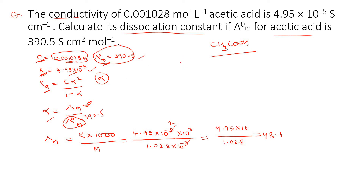Now we calculate alpha. Alpha = lambda M divided by lambda naught M. Lambda M = 48.1, and lambda naught M is given as 390.5. Doing the calculation: 48.1 divided by 390.5 gives 0.123. So alpha = 0.123.